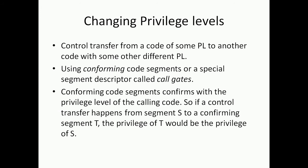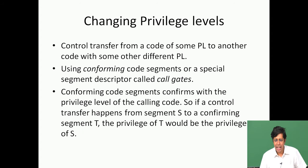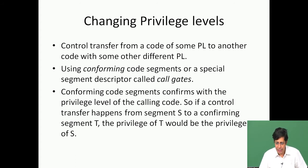What is a confirming code segment? The confirming code segment is a code segment, but it will have its own privilege level which is 'don't care.' The adjective confirming itself says it confirms to something else. If a control transfer happens from segment S to a confirming segment T, the privilege of T will be the privilege of S.